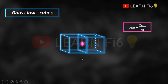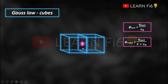Our intention is to find the flux shared by one cube. To do this, we divide the total flux by the number of cubes. The flux shared by a single cube is given by net charge divided by two times epsilon 0, since the entire flux is shared equally by two cubes.